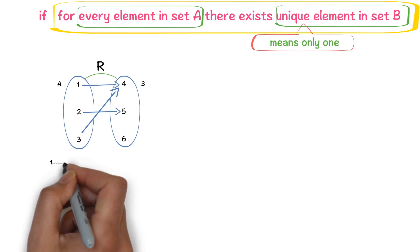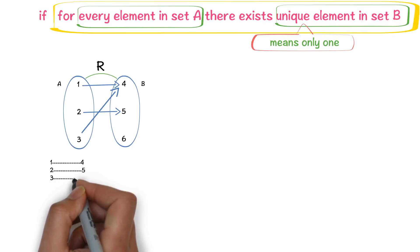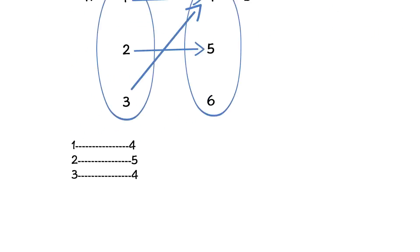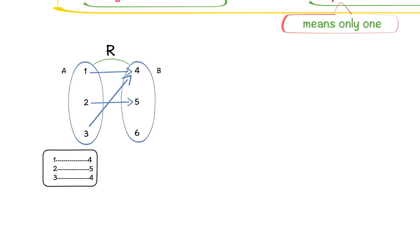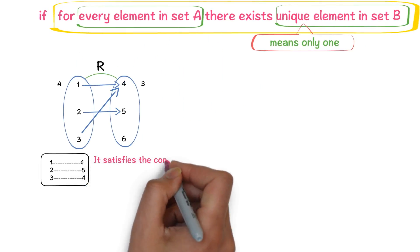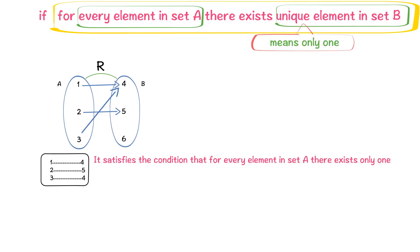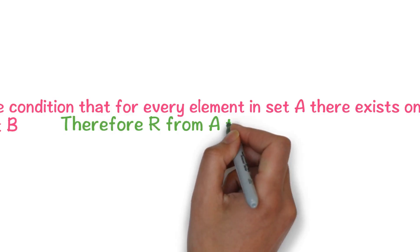For the element 1, there exists only one element, that is 4. For the element 2, there exists only one element, that is 5. For the element 3, there exists only one element, that is 4. For every element in set A, there exists only one element in set B. Don't confuse — elements 1 and 3 having the same image is different; unique element is different. So it satisfies the condition, and therefore R from A to B is a function.